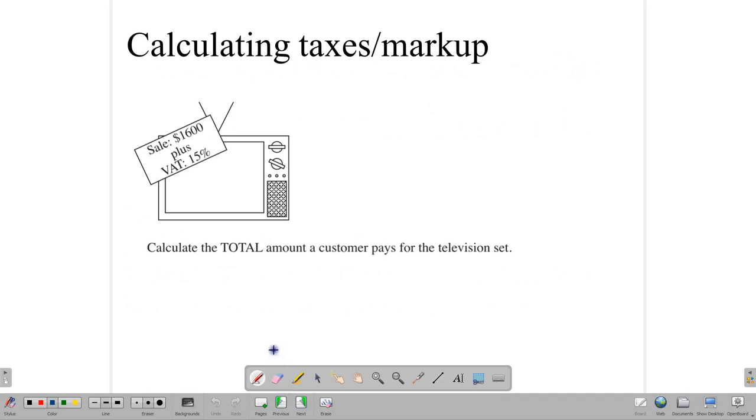Here is our first question. We're starting by looking at a television set priced at $1,600. It has a VAT of 15%. VAT here means value-added tax. And so to calculate the total amount a customer pays, what we're going to do is to determine, first of all, what, in terms of money, the VAT is.